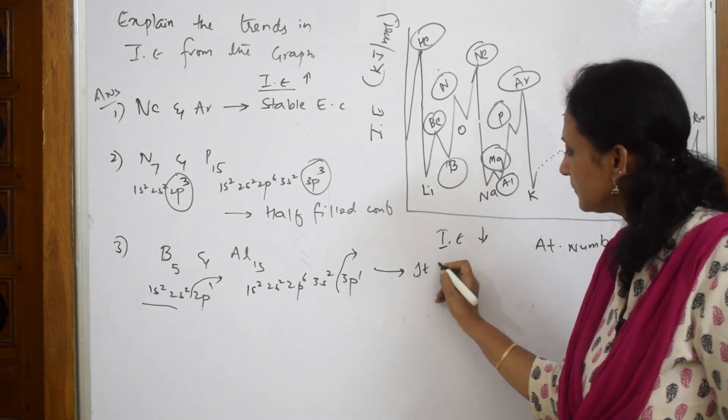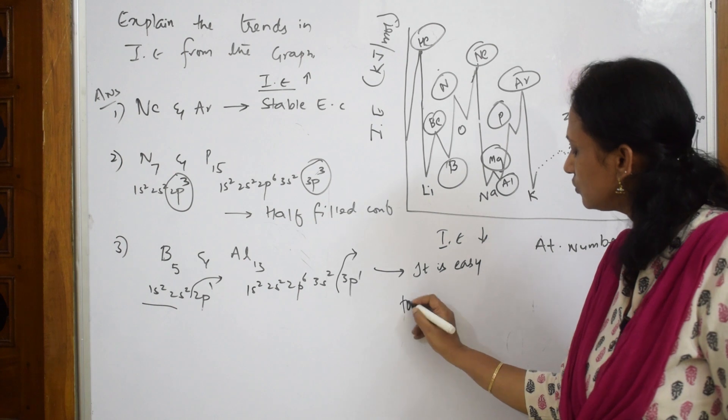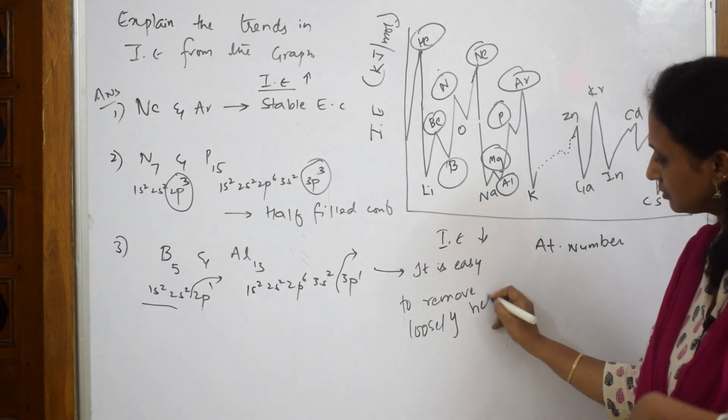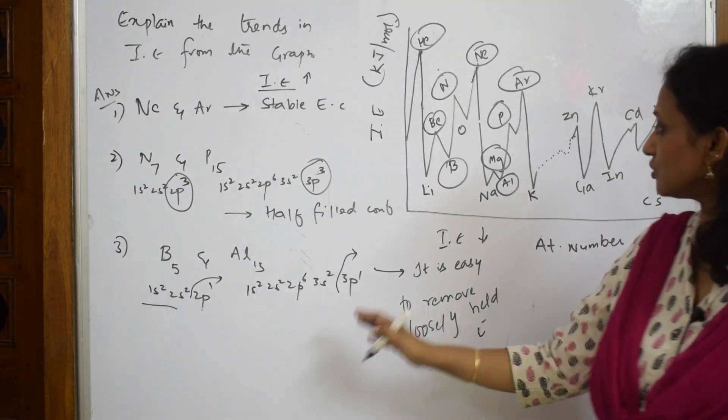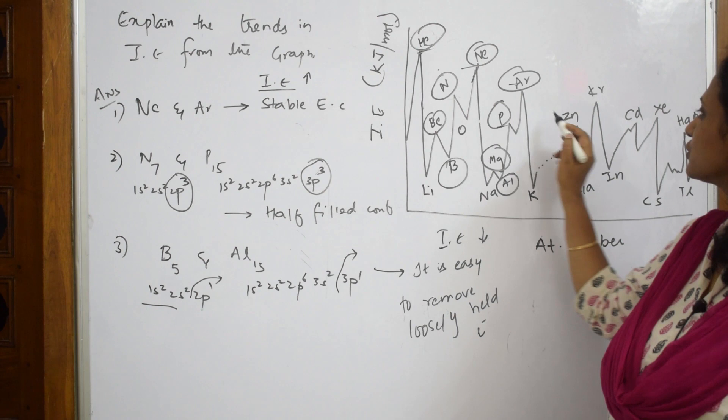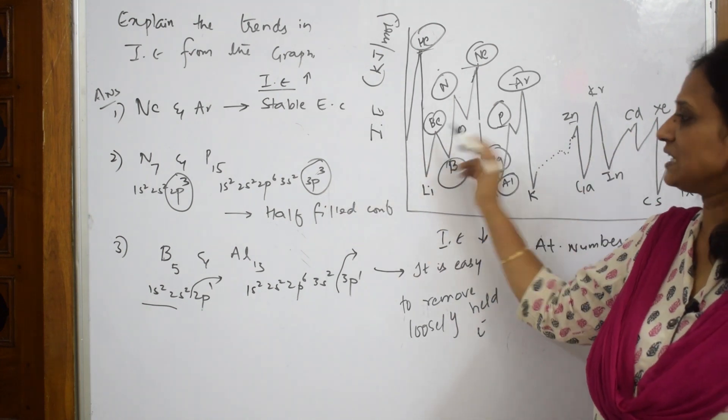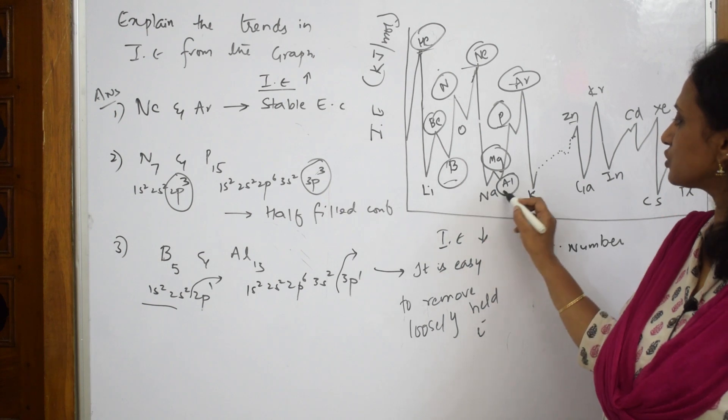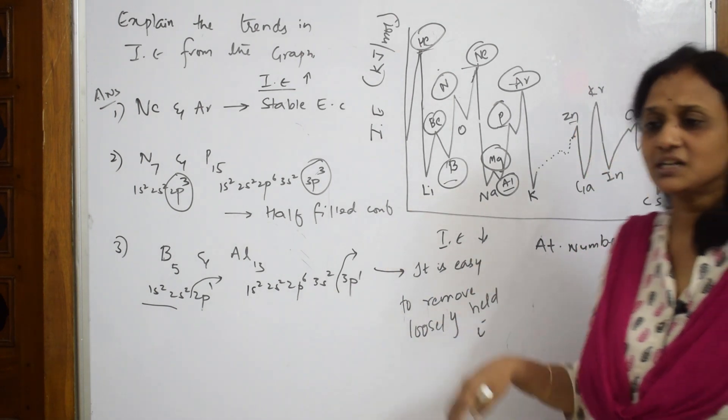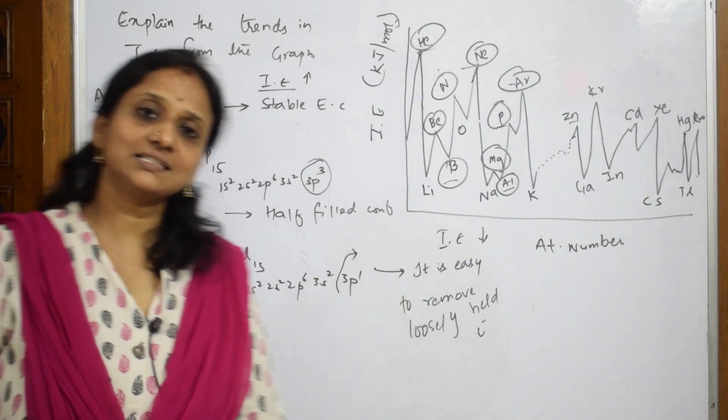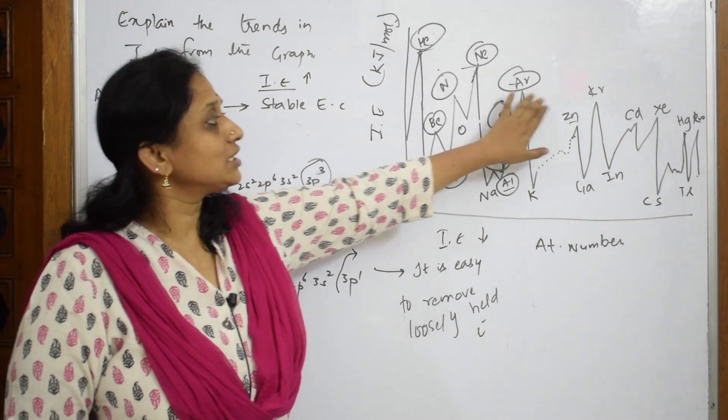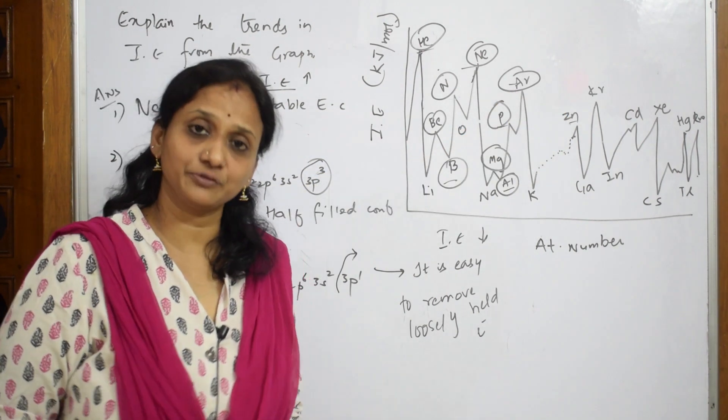So I have marked and discussed helium, neon, argon. We discussed nitrogen, phosphorus, zinc and beryllium also comes in the same category. Then I discussed two depths: boron, aluminum, potassium, gallium. If you write the configuration, the reason is the same - it is easy to remove a loosely held electron. That's why ionization enthalpy values are low for these. Because of completely filled and stable configuration, ionization enthalpy values are higher for noble gases and half-filled configurations.